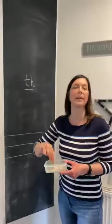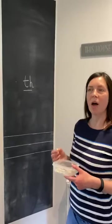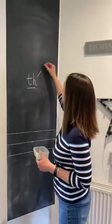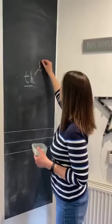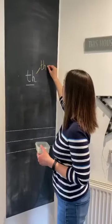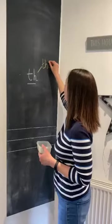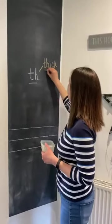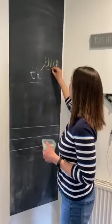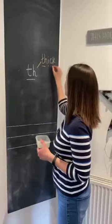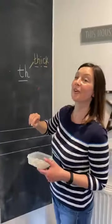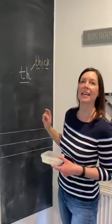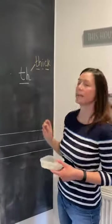Some words that begin with this sound are thick. Thick — so we've got th and it's the quiet one: th, i, ck. Thick. So we've got the digraph ck at the end.